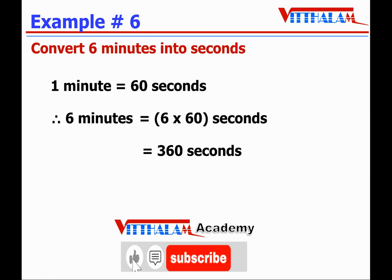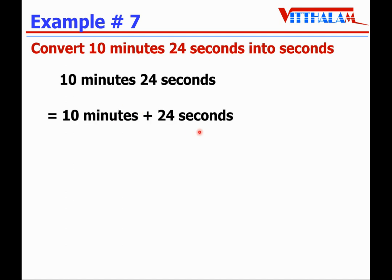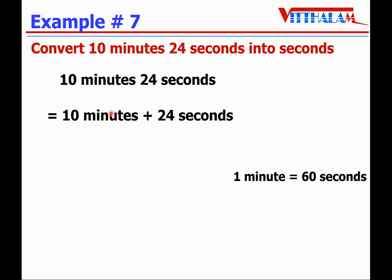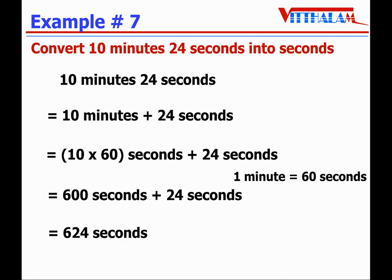Let's understand one more: convert 10 minutes 24 seconds into seconds. 10 minutes 24 seconds is nothing but 10 minutes plus 24 seconds. The relation is 1 minute equals 60 seconds, so 10 multiplied by 60 seconds plus 24 seconds. 10 times 60 is 600 seconds, plus 24 seconds equals 624 seconds.